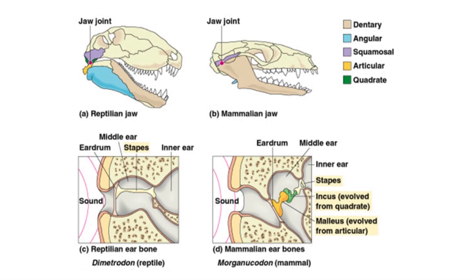In mammals, rather than having just one bone — the stapes — they have three bones employed in the transmission of sound. This helps to increase the spectrum of sound waves that can be detected by the ear. This transformation is considered one of the best examples of evolution.